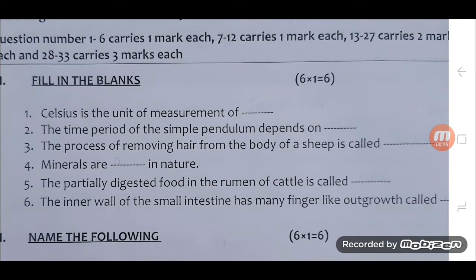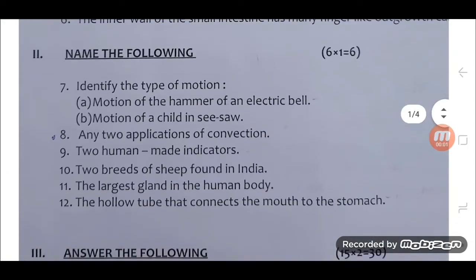4. Minerals are dash in nature. 5. The partially digested food in the rumen of cattle is called dash. 6. The inner wall of the small intestine has many finger-like outgrowth called dash.